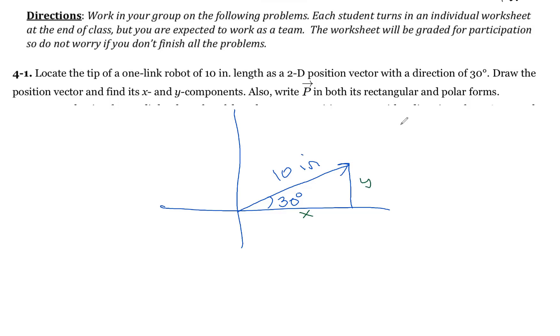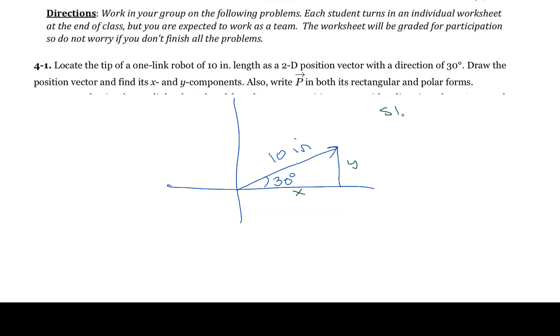So I can say that the sine of 30 degrees is equal to the opposite over the hypotenuse, which is equal to the opposite, the opposite is y, because we're going opposite of 30 degrees, divided by 10.